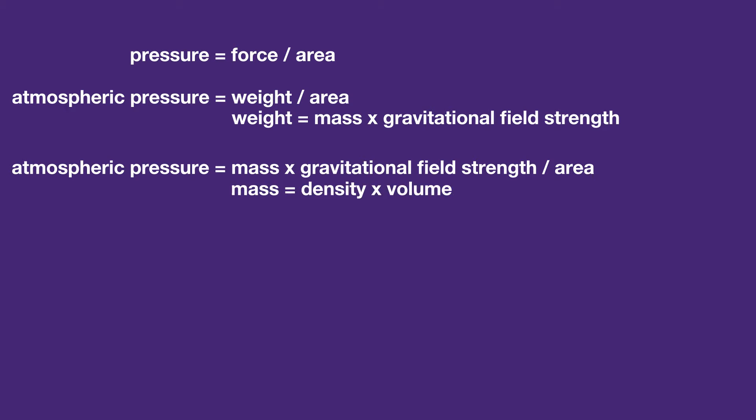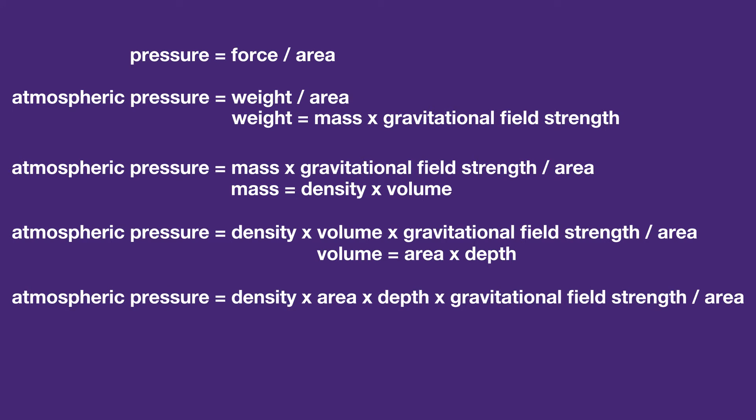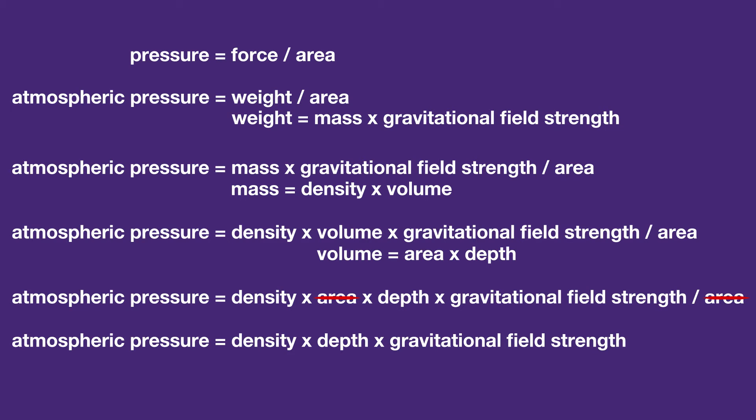We know that mass equals density times volume, so then the pressure is density times volume times gravitational field strength divided by area. And finally the volume is just the area times the depth, so we can write atmospheric pressure equals density times area times depth times gravitational field strength divided by the area. Then we can cancel the areas out, so the pressure in a fluid is: pressure equals density times depth times gravitational field strength.